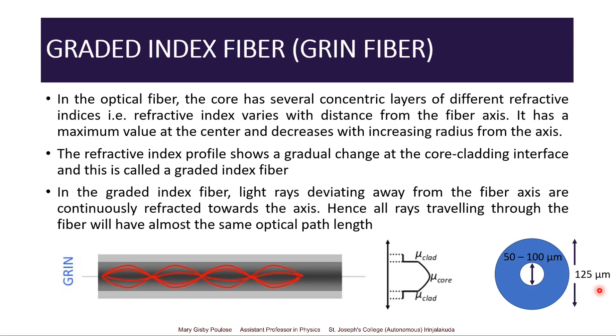For the graded index fiber, the dimension of the cladding is 125 micrometers, whereas the dimension of the core is 50 to 100 micrometers.